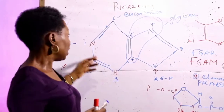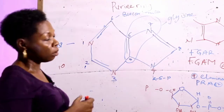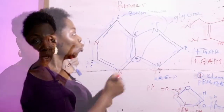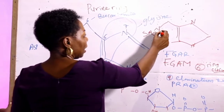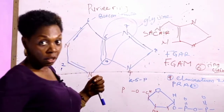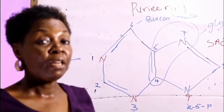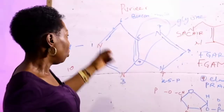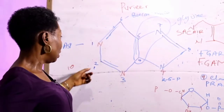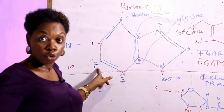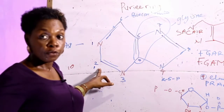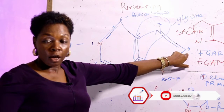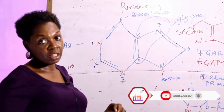The next reaction is the acquisition of nitrogen 1, and this is furnished by the amino acid aspartate, giving us the compound SACAIR. The next reaction is an elimination reaction which removes the fumarate component of the amino acid. Then the last acquisition occurs at position 2 — carbon 2 is furnished by the same precursor molecule that furnishes carbon 8, which is tetrahydrofolate.